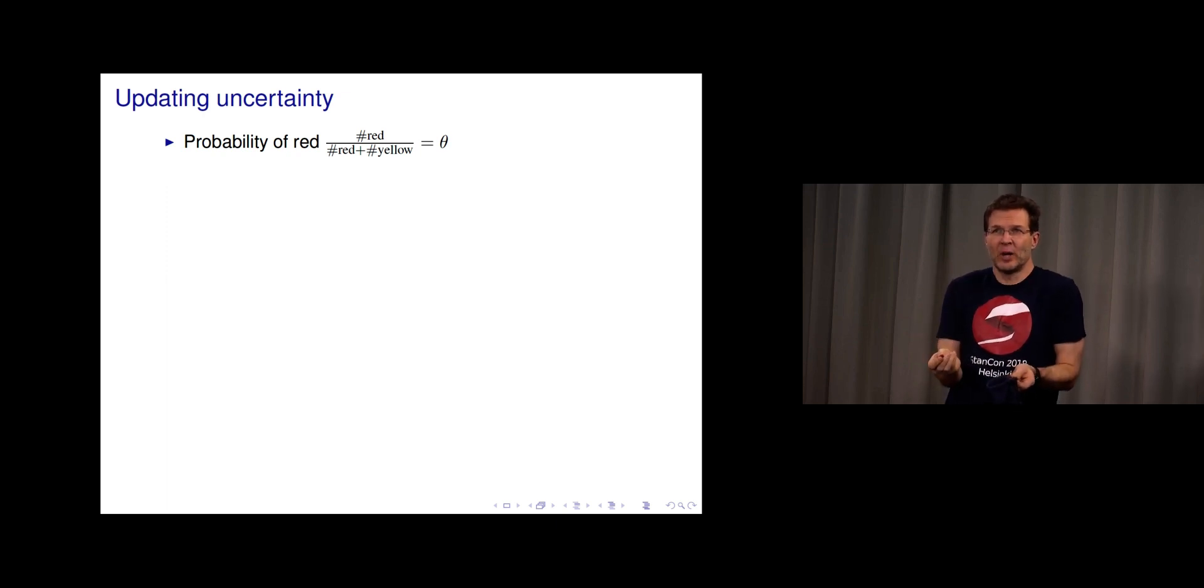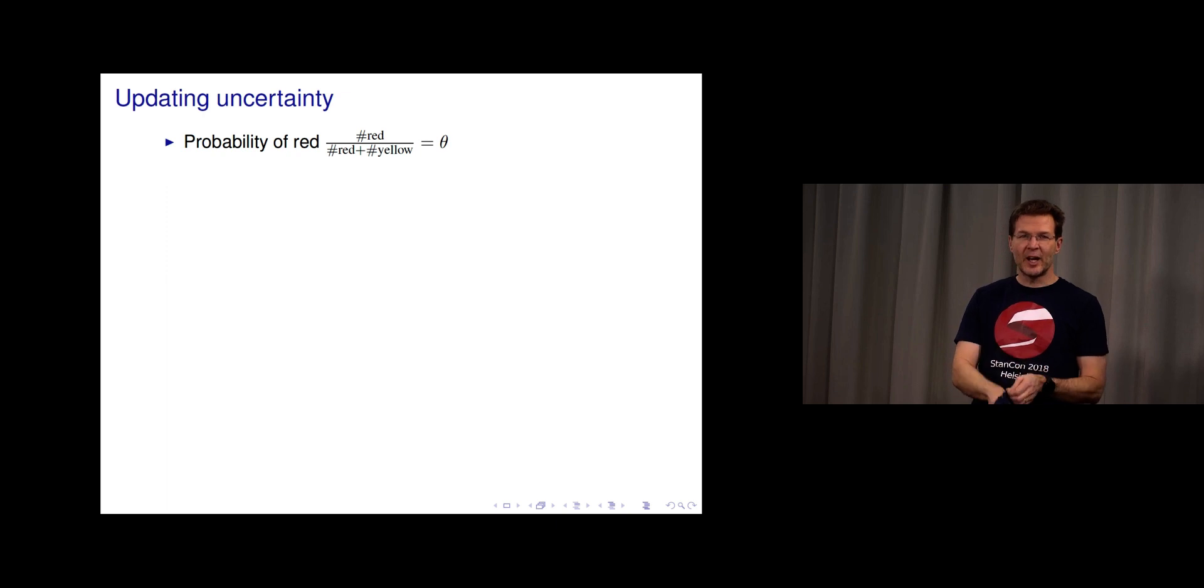We denote it with letter theta. In this case, if I would have half red and half yellow, it would be exactly as the coin. If I would have less reds, the probability would be just something different. But otherwise it would be the same, and we would have this aleatoric uncertainty about the color of the next chip.